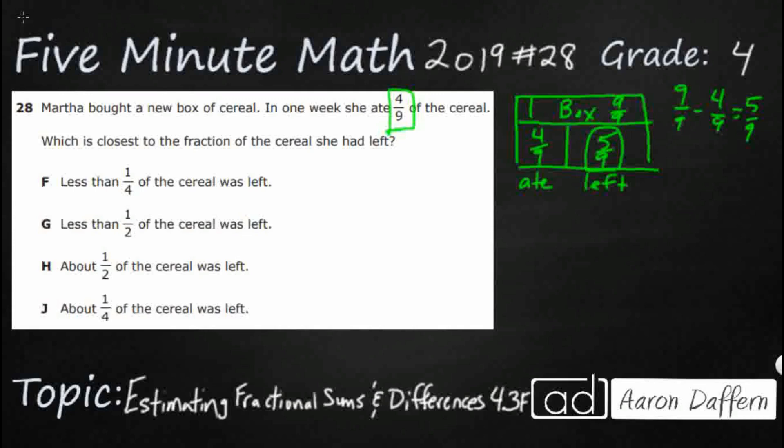So the five-ninths is going to be either less than a quarter, less than a half, about a half, or about a fourth. So let's see what we have here.